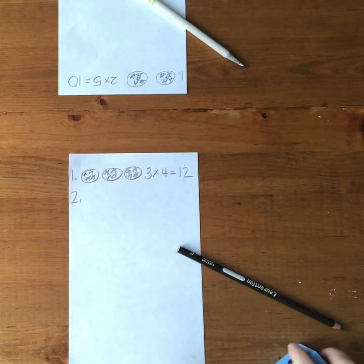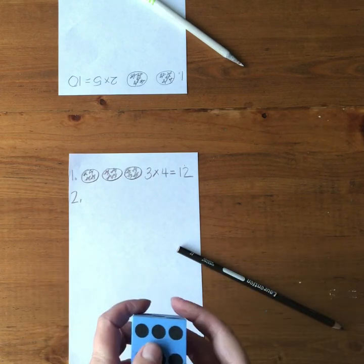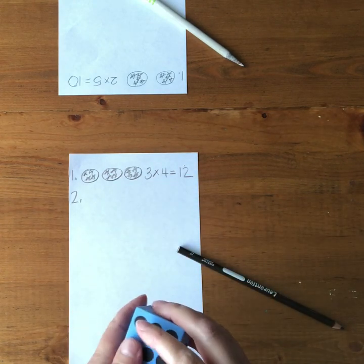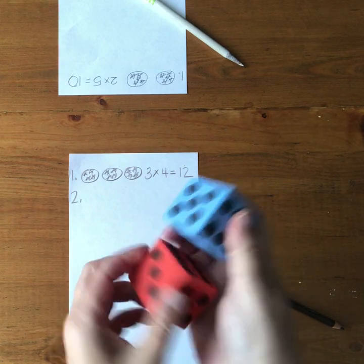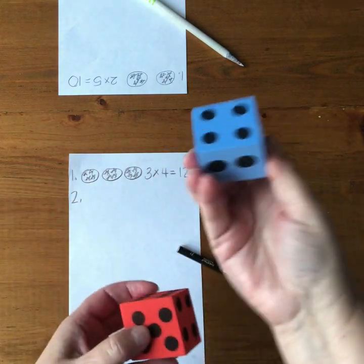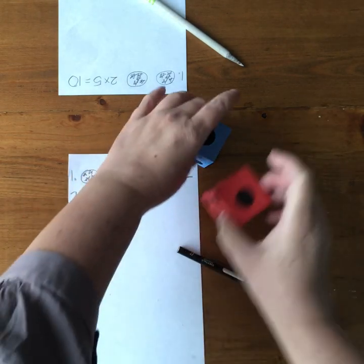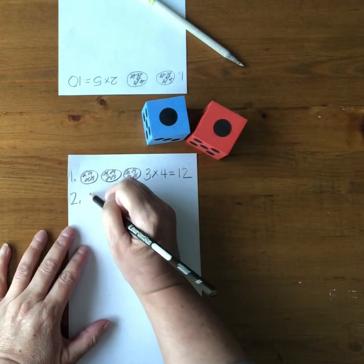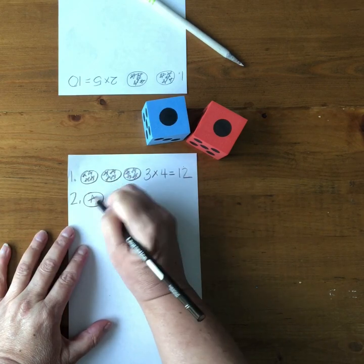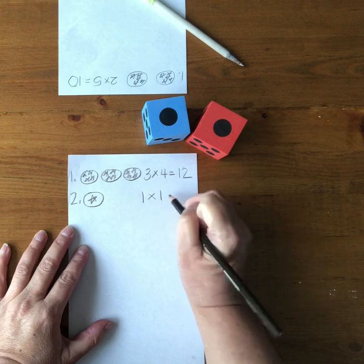If I'm playing with a partner or a small group we each take turns rolling the dice and writing down our circles and stars in our equation and so at this time I'm using two different colored dice one for the circles that'll be the blue and one for the stars that'll be the red so I roll my dice oh one and one so I draw one circle and one star and the equation is one times one equals one.